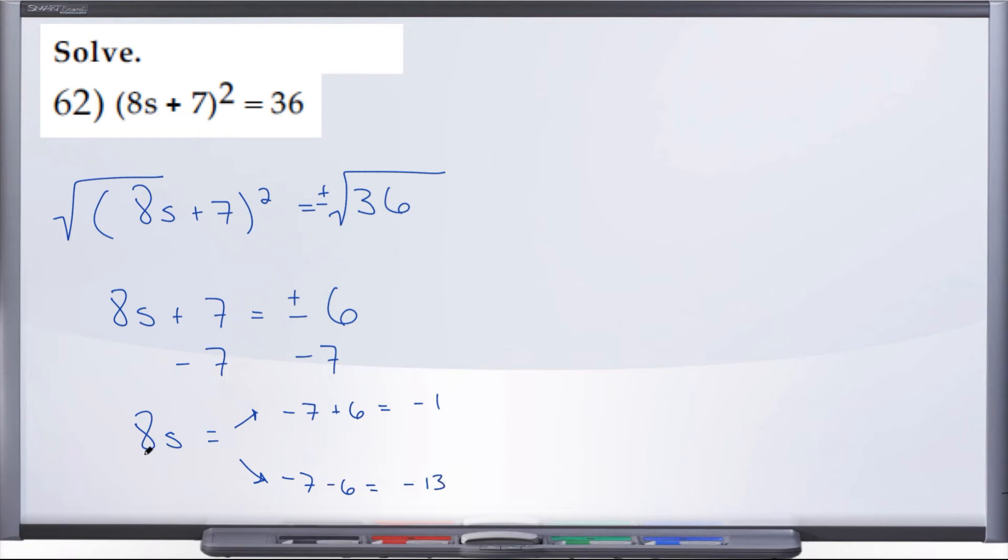And finally, let's divide by 8. So we'll divide by 8 and divide by 8. Here are our two answers: s equals negative 1 over 8, and s equals negative 13 over 8.